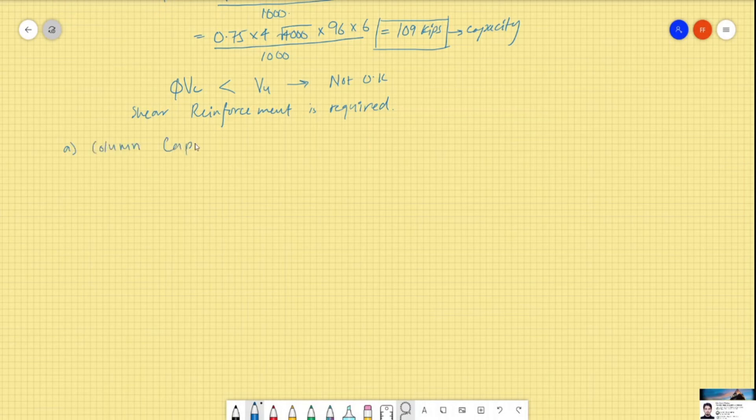Now we will solve the shear problem with the column capital. In order to find the actual dimension of the column capital, we need to find the minimum shear parameter that is required. So we will put phi Vc equal to Vu. We will put capacity equal to demand.